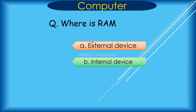Question: Where is the RAM located? A. External device, B. Internal device. Correct answer is B. Internal device.